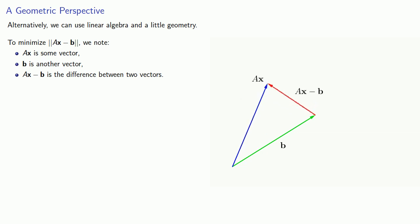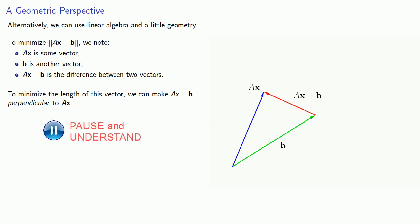And we want to make the length of this vector as short as possible. So as we change x, this vector Ax and Ax - b will change. And so to minimize the length of this vector, we can make Ax - b perpendicular to Ax. And so from our geometric perspective, we could require Ax · (Ax - b) to be 0.